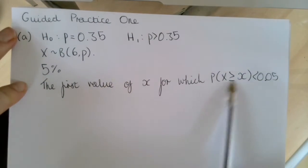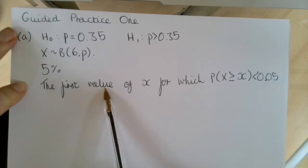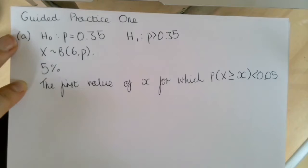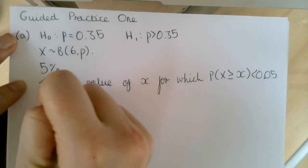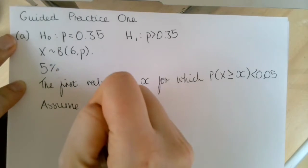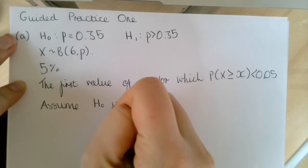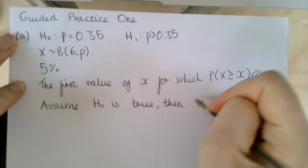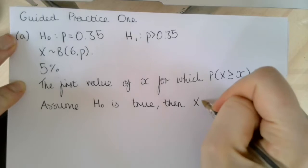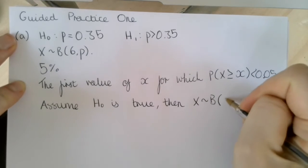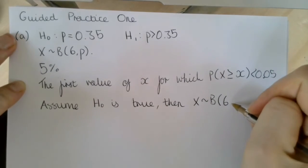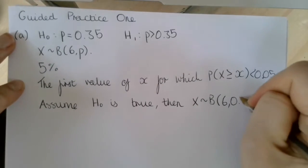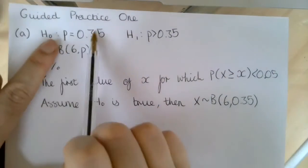This will give us the critical region for where the null hypothesis is true. So if we assume H0 is true, then our variable x will be binomially distributed with n equals 6 and our parameter equal to 0.35.